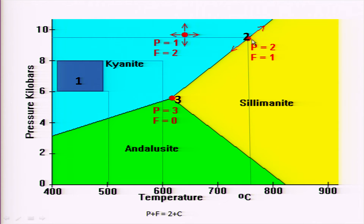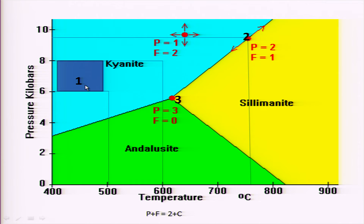Let us examine point 2 using the same equation. The number of phases is 2 and the degree of freedom is 1, so 2 + 1 = 3. The number of components is still 1, so 2 + C = 3. We see that the relationship P + F = 2 + C is valid for both position 1 and position 2.